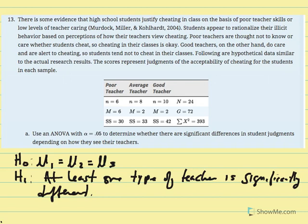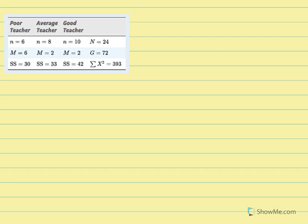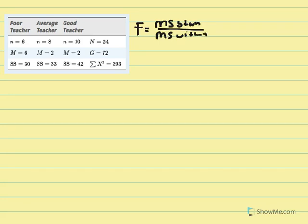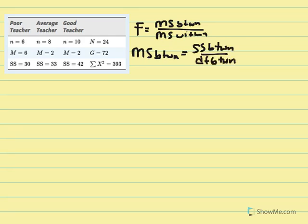We'll conduct an ANOVA test with alpha 0.05. Our F ratio is equal to MS between — mean squares for between conditions, where we have a quasi-independent variable — over the mean squares for within. MS between equals SS between over DF between, and MS within equals SS within over DF within.